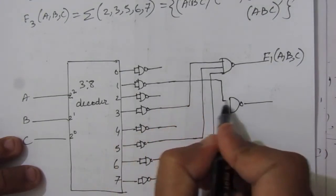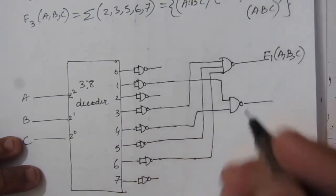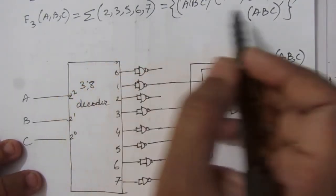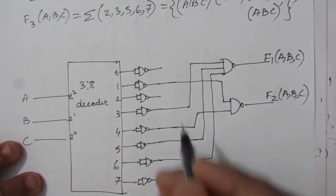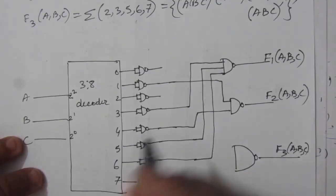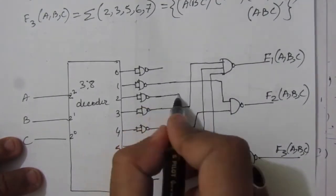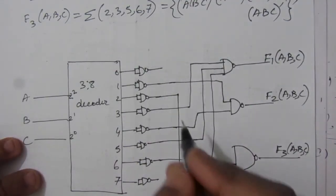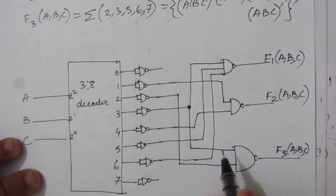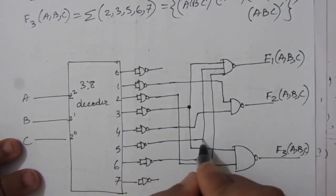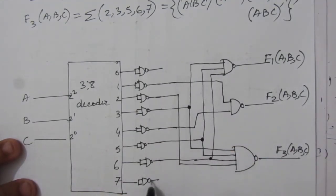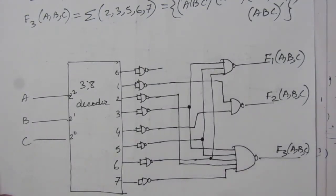For F3, the minterms are 2, 3, 5, 6, and 7. We draw a five-input NAND gate and connect: line 2, line 3, line 5, line 6, and line 7 from the decoder. These five lines are the inputs of the NAND gate, and the output gives us F3(A, B, C). This completes the circuit diagram for all three functions using a 3-to-8 decoder.